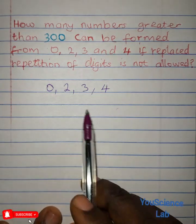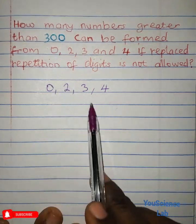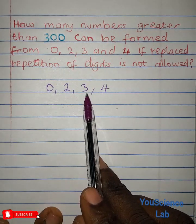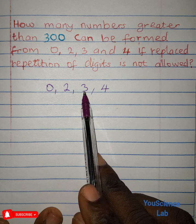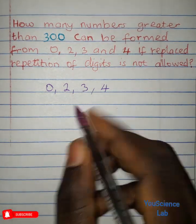So to form a three-digit number that is greater than 300, it means that the first digit may either start with 3 or 4. So we have two ways or two numbers to choose from.